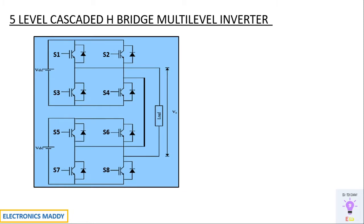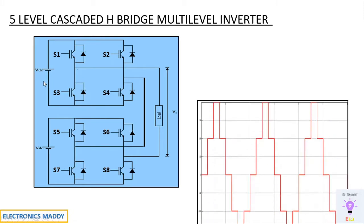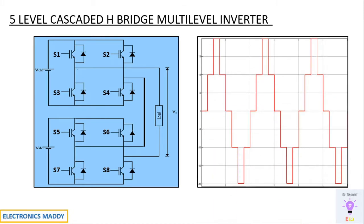This is the circuit diagram of a five-level cascaded H-bridge multi-level inverter. If you carefully observe this circuit, it basically contains two inverter circuits that are cascaded. A resistive load is considered in this circuit. I'll be considering a supply voltage of 100 volts. What is the expected waveform and why do we need such a configuration — that is one of the most important things to understand before starting any simulation.